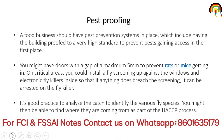Second: Food or Pest Proofing. Food businesses should have pest prevention systems in place, including having the building proofed to a very high standard to prevent pests gaining access in the first place. You might have doors with a gap of maximum 5mm to prevent rats or mice, as they will contaminate food and render it unfit for human consumption. On critical areas, you could install fly screening against windows and an electronic fly killer inside, so that if anything does breach the screening it can be arrested. It's good practice to analyze the catch to identify fly species as part of the HACCP process.